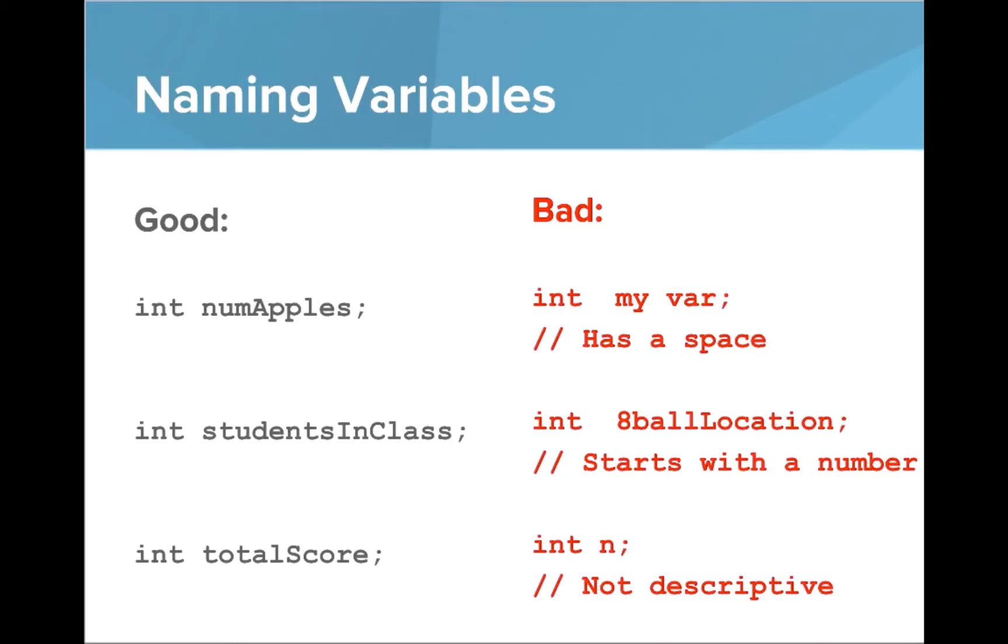Let's look at some bad examples. Int my space bear, that's not good because it has a space in it. Int 8ballLocation, that doesn't work because it starts with a number. And int n, well that's not very descriptive of what we're trying to do.